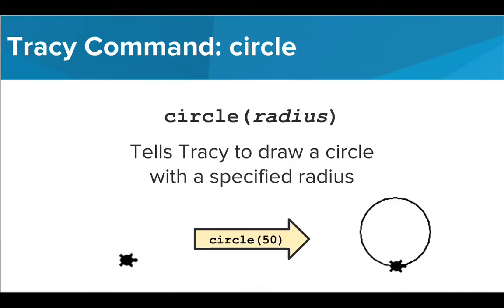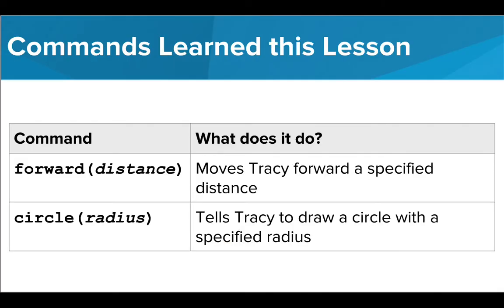We've seen how to move Tracy forward, but let's learn one more command that Tracy knows. The circle command will tell Tracy to draw a circle with a certain radius value. The radius of a circle is the distance from the center to the circle's edge. In this lesson, we learned how to communicate with Tracy using the forward and circle commands.